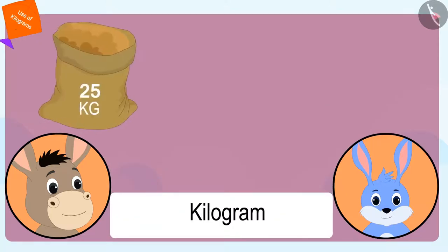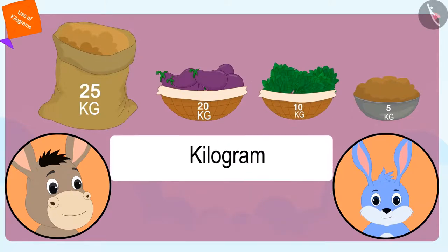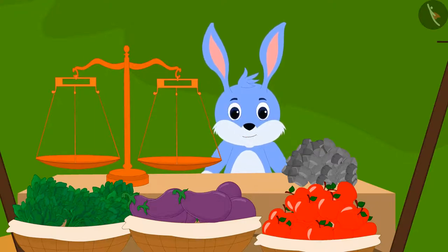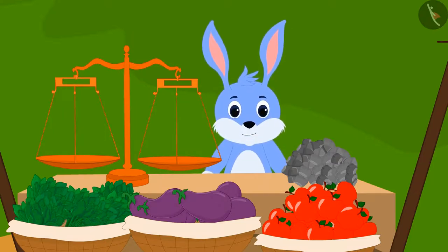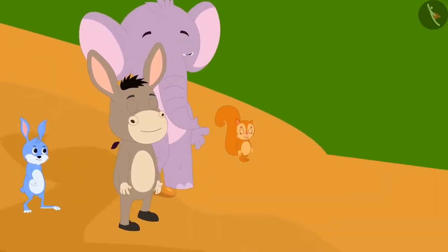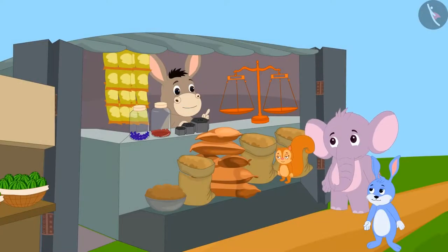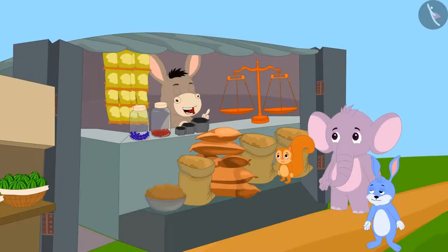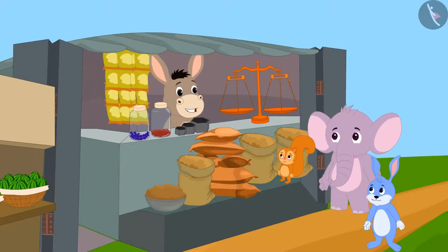A kilogram is a unit of measuring weight that always remains the same. Bunny said to Bhoala, 'I understand that kilogram is a unit of weight measurement, but how can we use it to measure the weight of objects?' Bhoala, along with Bunny, Appu, and Chanda, reached his shop and showed them the weights used for this purpose.